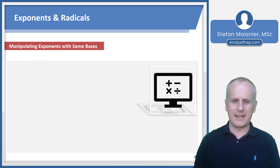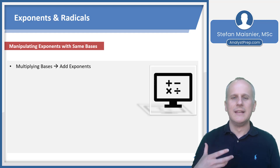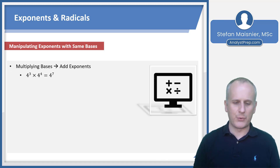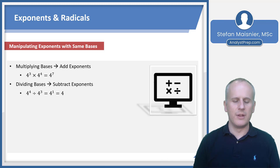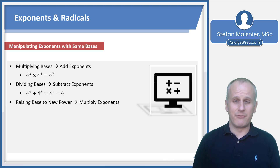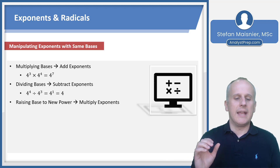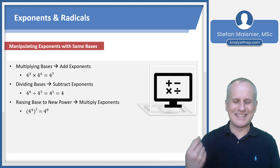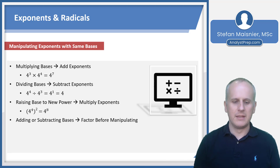Now let's talk about manipulating exponents when you have the same base. If you multiply bases, you simply add the exponents: four to the third times four to the fourth is four to the seventh. If you're dividing, subtract the exponents: four to the fourth divided by four to the third is four to the first, or just four — every integer without an exponent implicitly has an exponent of one. And if you raise a base to a new power, multiply the exponents: four to the fourth raised to the second power is four to the eighth.